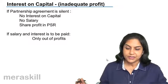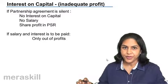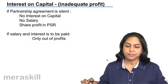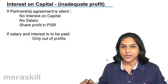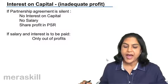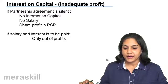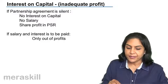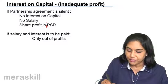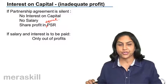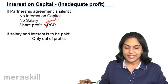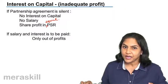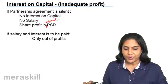Interest on capital in case of inadequate profit — we discussed this before but reiterating: if the partnership agreement is silent, no interest on capital and no salary is payable, and profits are shared in equal ratio. So if a partnership agreement is silent, interest on capital is not payable, no salary is to be paid, and the profit sharing ratio is supposed to be equal.